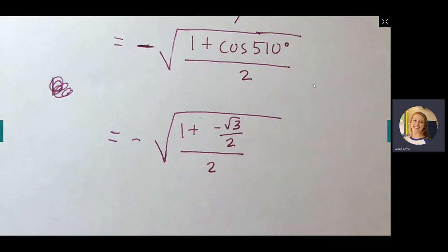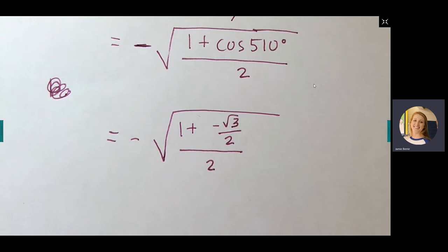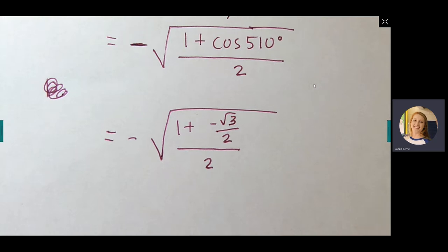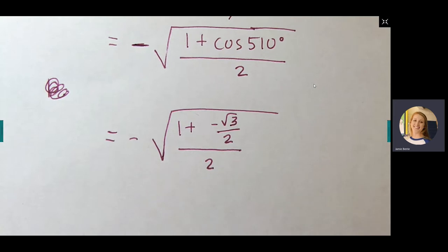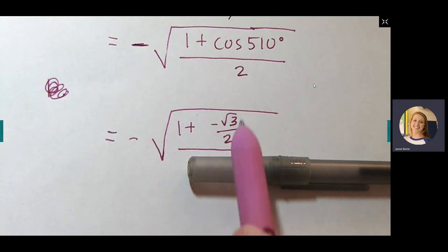From here, you need to keep-change-flip because you have a complex fraction. For keep-change-flip to work, the numerator needs to be one expression — one big fraction — not a sum or difference. So we need to get a common denominator up in the top first, then we can keep-change-flip.